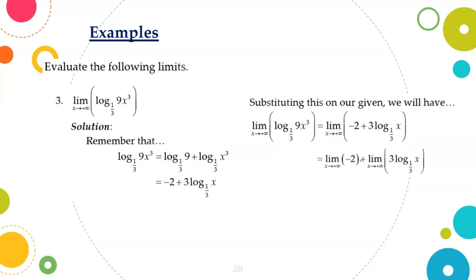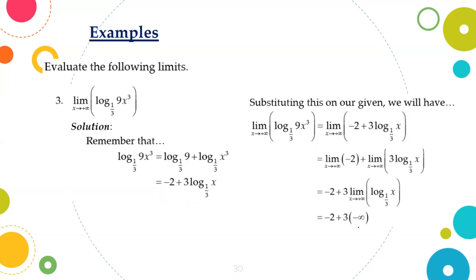This can be expressed as the limit of -2 as x approaches positive infinity, plus the limit of 3 times log base (1/3) of x as x approaches positive infinity. The limit of any constant is the constant itself, and the constant multiple 3 can factor out of the limit. Applying the theorem, the limit of log base (1/3) of x as x approaches positive infinity equals negative infinity. Hence, -2 plus 3 times negative infinity equals negative infinity.